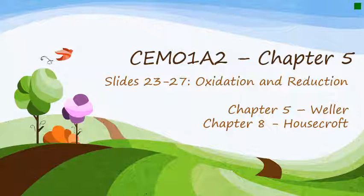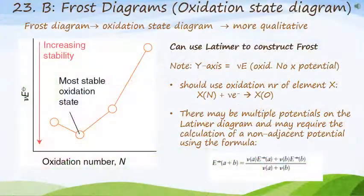We go on to look at the second type of diagrammatic representation of potentials, and these are Frost diagrams. Frost diagrams are oxidation state diagrams and they are qualitative, so they can give us an indication of how species are going to behave, but not necessarily any information about the amount.